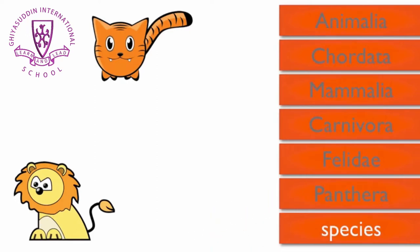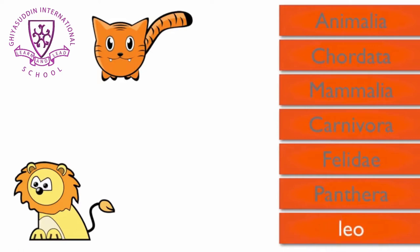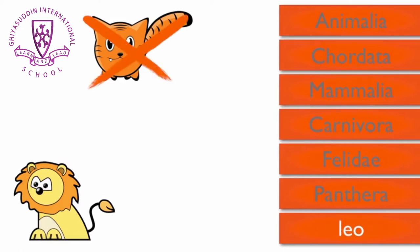Finally, we have a level called species. Members of this group can breed and produce offspring. The lion's species name is leo, so the tiger is removed from this group.